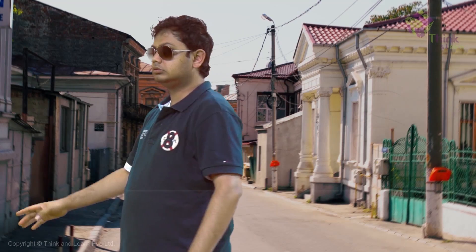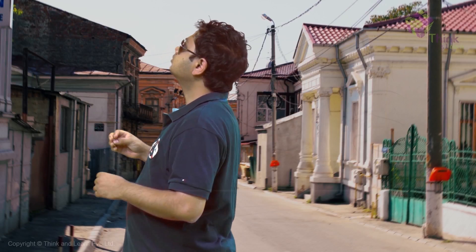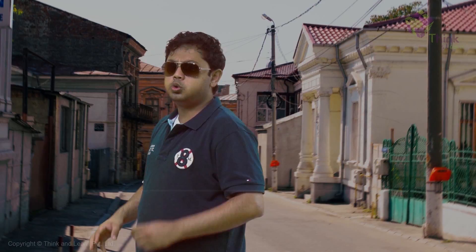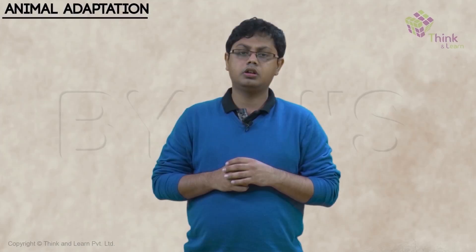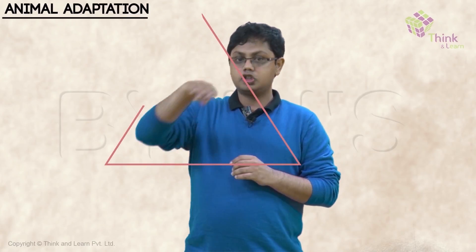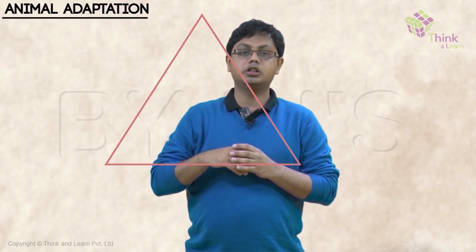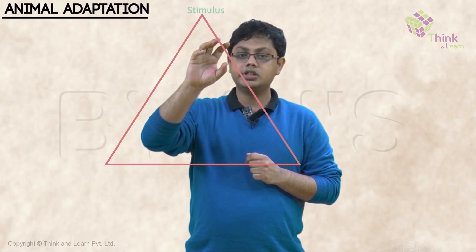The abiotic factors put stimuli on the biotic factors. The stimuli puts stress on the biotic factors — for example, we produce sweat. What was the stimulus here? It was the sunshine and the heat from the sun. Let me make it simple for you — let's basically draw this particular triangle. We have a stimulus, and the stimulus puts stress on life forms.